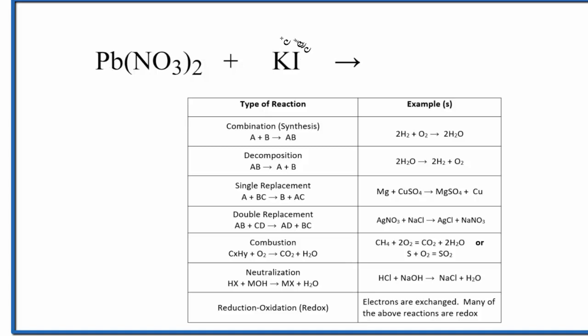So I see I have two ionic compounds here. My thinking is that the lead will change places with the other metal, like this, because I have two ionic compounds. That would make this a double replacement reaction.